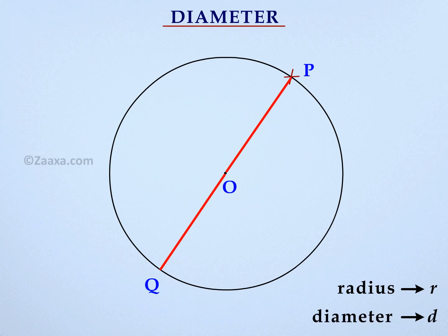Do you notice that the diameter is made up of two radii? Hence, diameter of a circle is equal to twice its radius. We write D is equal to 2R.